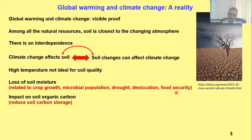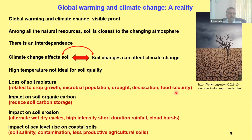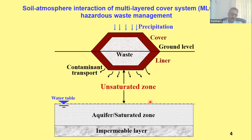The impact on soil organic carbon — as I mentioned, it is a major source of carbon storage. The impact on soil erosion: alternate wet and dry cycles, high intensity short-duration rainfall, and cloudbursts. The impact of sea level rise on coastal soils — essentially dealing with soil salinity contamination, which leads to less productive agricultural soil. On December 5th we celebrated International Soil Day, and one of the major mandates of the Soil Science Society is to deal with soil salinity, which is also a global issue. Another important aspect is the waste containment system — how soil-atmosphere interaction is useful in designing the multi-layered cover system, which covers the waste, while the liner system prevents waste from migrating into the soil.